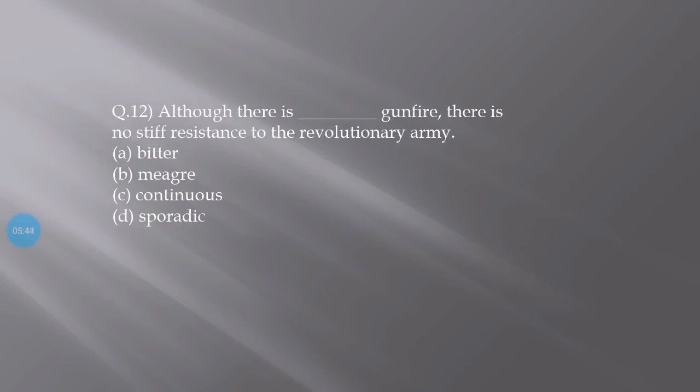Although there is some gunfire, there is no stiff resistance to the revolutionary army. The options are bitter, meager, continuous, and sporadic. The correct answer is D - sporadic.